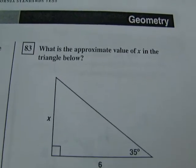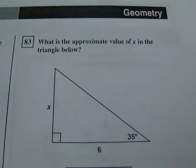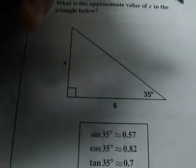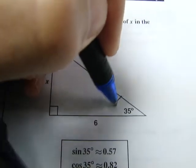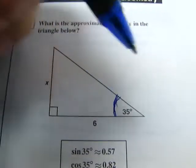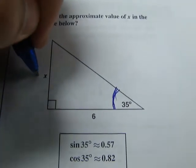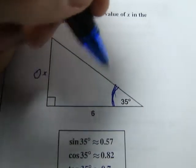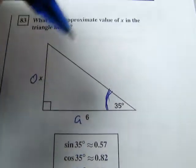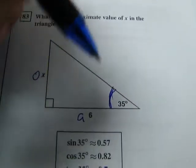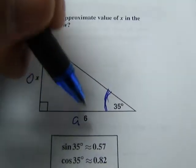Number 83. What is the approximate value of x in the triangle below? Not very imaginative. But hey, it's simple. Straight to the point. We've got this angle. 35 degrees. X here is the opposite. This time there is no hypotenuse given. Instead it's an adjacent. So what type of problem is it? That's right. It's a tangent. Opposite over adjacent.